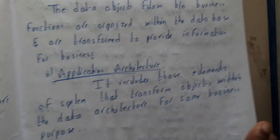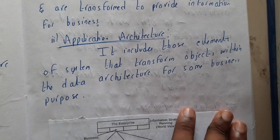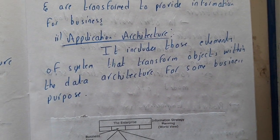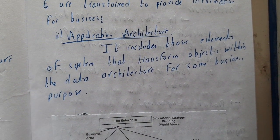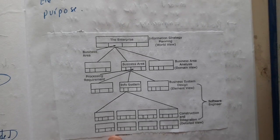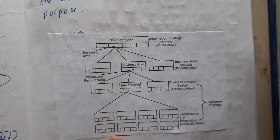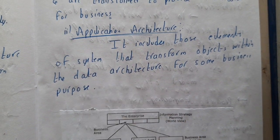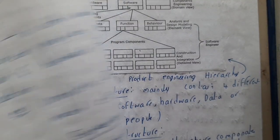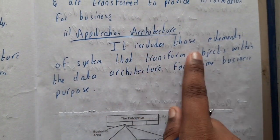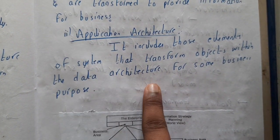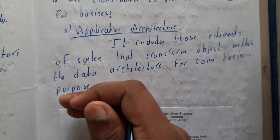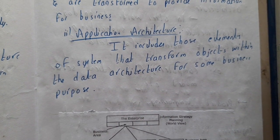Now let us go through application architecture. I hope everyone watched the previous lecture where we discussed the hierarchical structure — system hierarchy and system engineering hierarchy. Application architecture includes those elements of the system that transform objects within the data architecture for some business purpose.